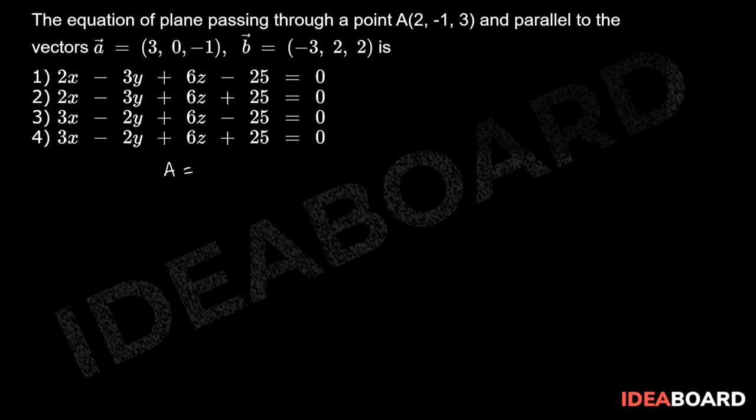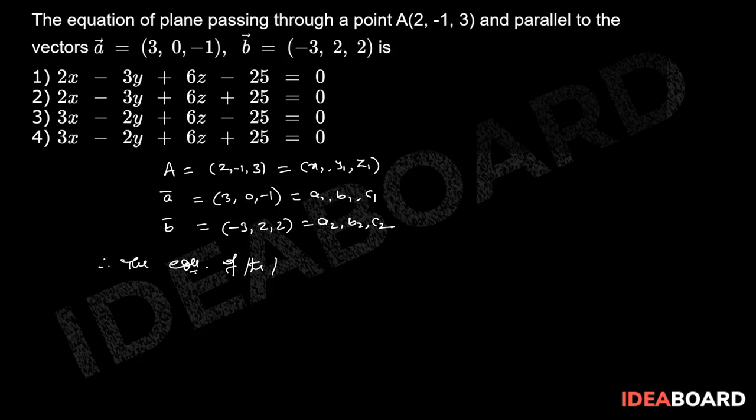Here the given point A equals (2, -1, 3), that is x₁, y₁, z₁. Given vectors a̅ equals (3, 0, -1), that is a₁, b₁, c₁, and another vector b̅ equals (-3, 2, 2), that is a₂, b₂, c₂.